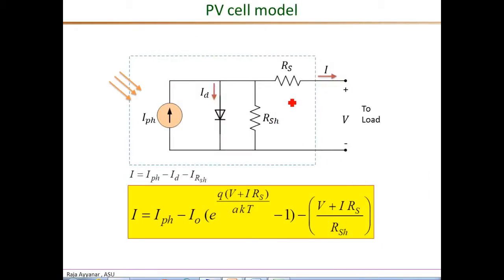Okay, so this is our complete model of the PV cell. The light intensity dependent current source IPH in parallel with the forward biased diode, whose current is given by this equation, this exponential equation. And finally, the two parasitic resistances modeling the losses.